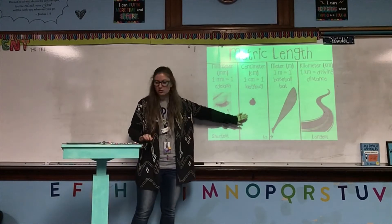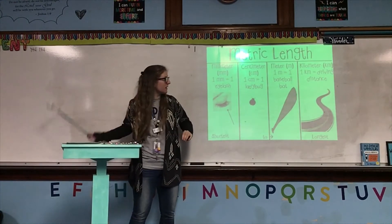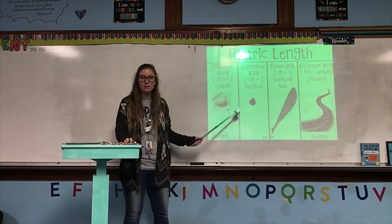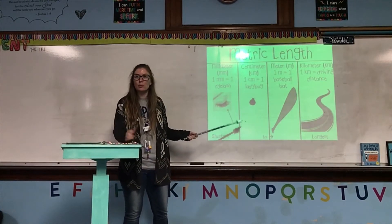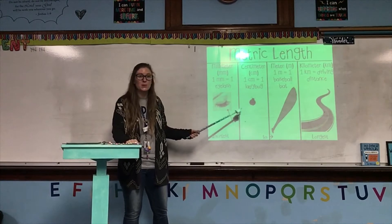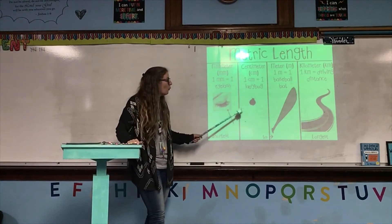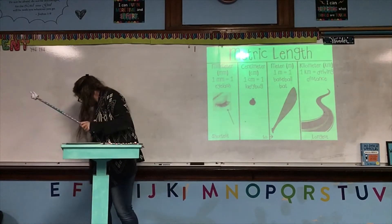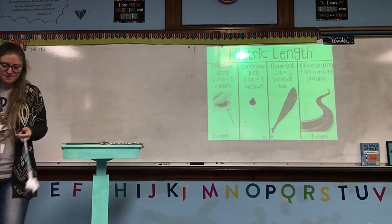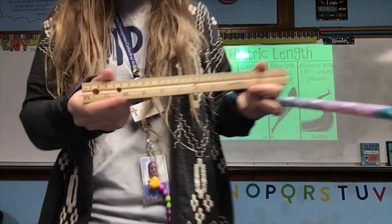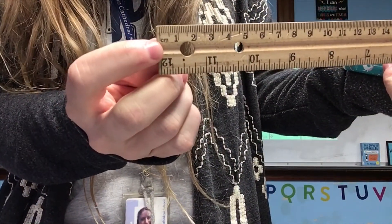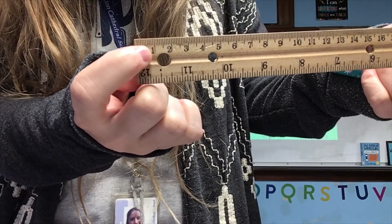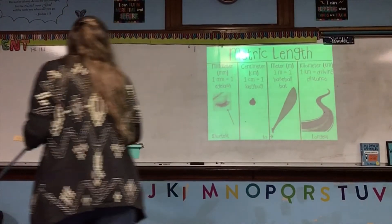The next unit is the centimeter, abbreviated as cm. These are probably what you've worked with up to this point, up until fourth grade. One centimeter is about the size of a ladybug, so again, very small. On our ruler, one centimeter is from the first line to the one, and millimeters are all the little ones in between.